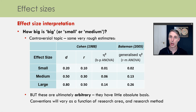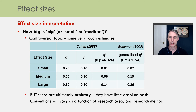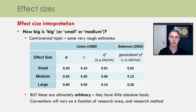Thinking back to these suggested cut-offs, a key thing to emphasise — and Cohen himself emphasised this — is that these are ultimately arbitrary. They have very little absolute basis. The conventions about what we should regard as small, medium, large, or indeed meaningful, will vary quite a bit as a function of research area, research methods, and so on. Although it's common to reference these cut-offs with a citation to Cohen, Cohen himself emphasized that they are arbitrary and don't inherently carry meaning.